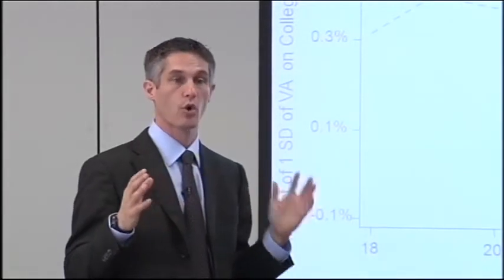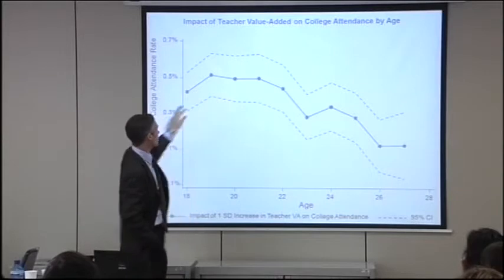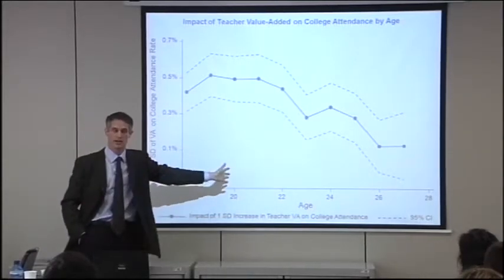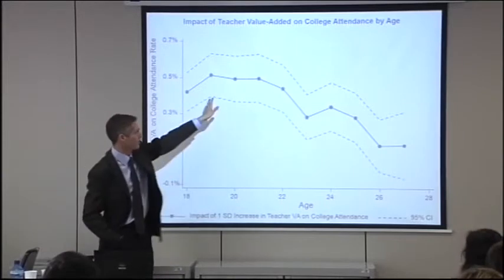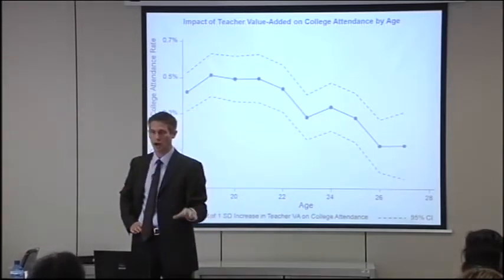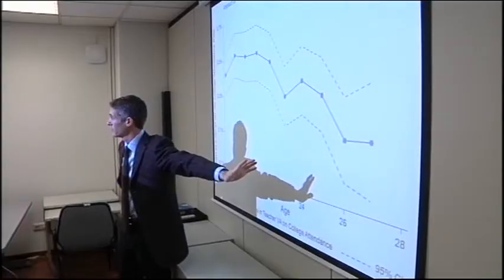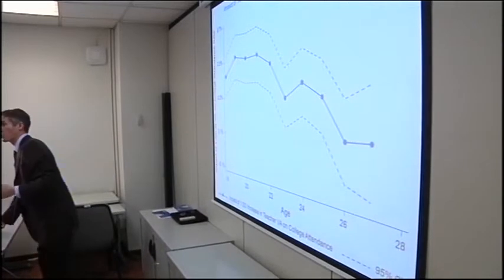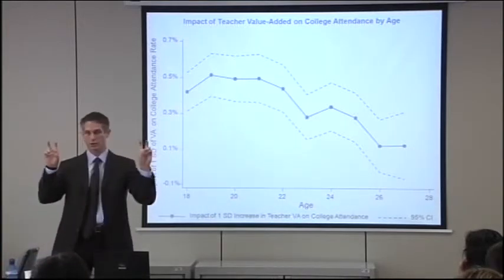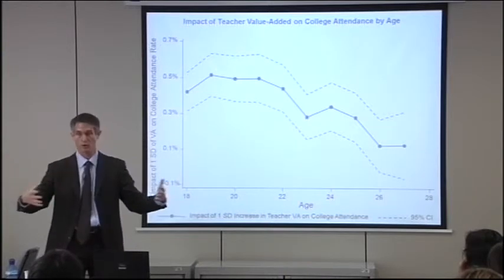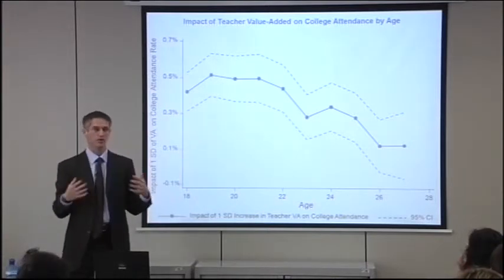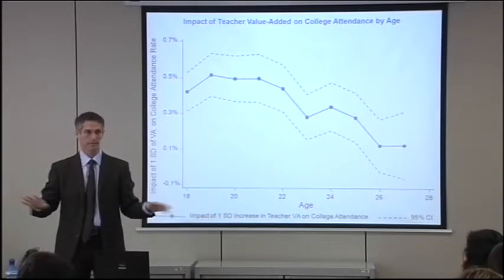How does that impact college attendance over different ages? Not surprisingly, the impacts on whether you go to college are biggest for the most common college attendance ages — 18, 19, 20, 21 — but importantly, we see positive and significant impacts of having a high value added teacher on college attendance all the way out until the mid-20s. This population of students in this poor urban city — a lot of them go to college in a broad sense: training programs, job training programs, certificate programs — out into their mid-20s. They're not just going to four years of university. These are non-typical students.